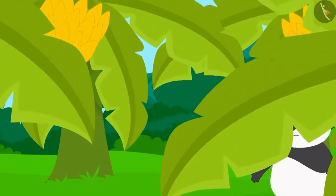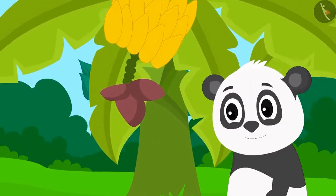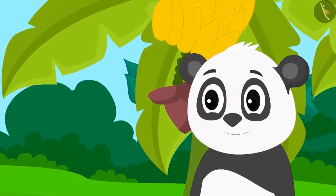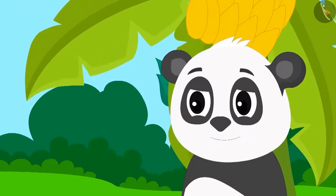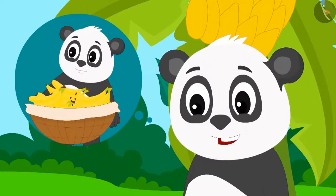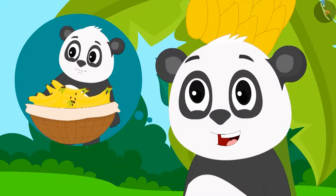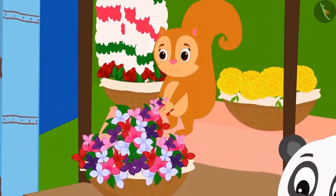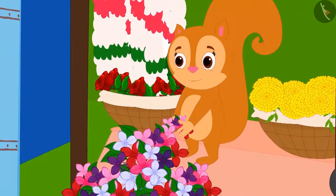Golu Panda's banana orchard reaped a good harvest this season. He thought that he could earn a lot of money by selling these bananas in the market. At the same time, Chanda Squirrel had set up her flower stall.